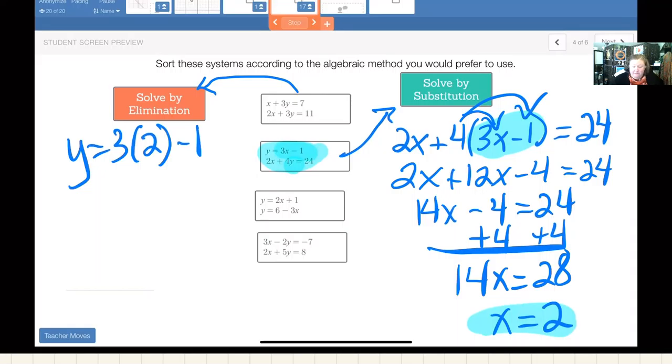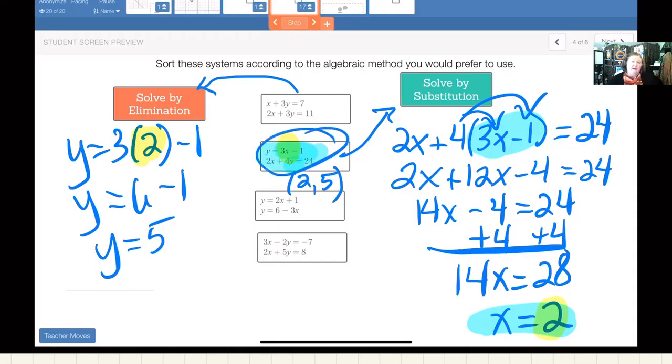So y is equal to 3x minus 1 is the first one, so I'm going to put the 2 where the x was. So if you notice, 3 times x, I'm saying x is 2, so it's now 3 times 2. So y is equal to 6 minus 1, y is equal to 5. The answer for this system of equations is 2, 5. If I were to graph these two lines on a graph, they would cross at 2, 5. That's what all of this means.